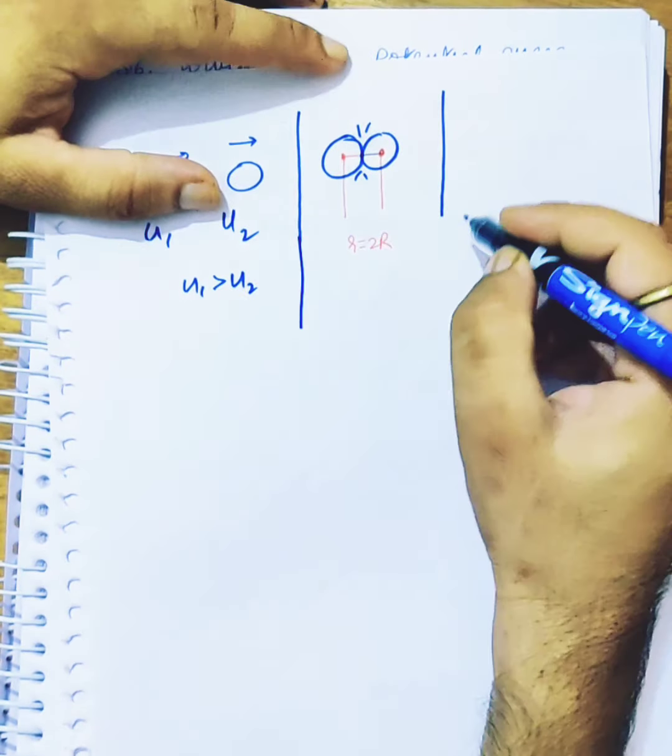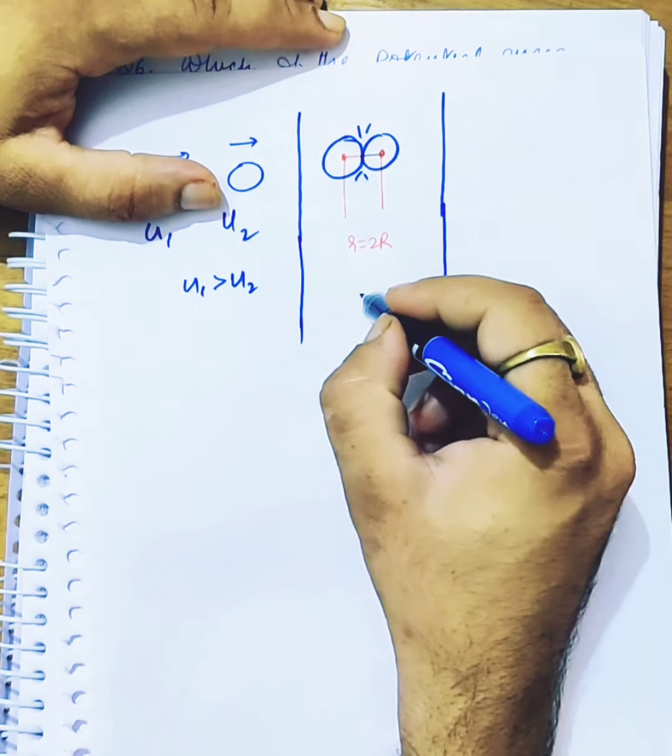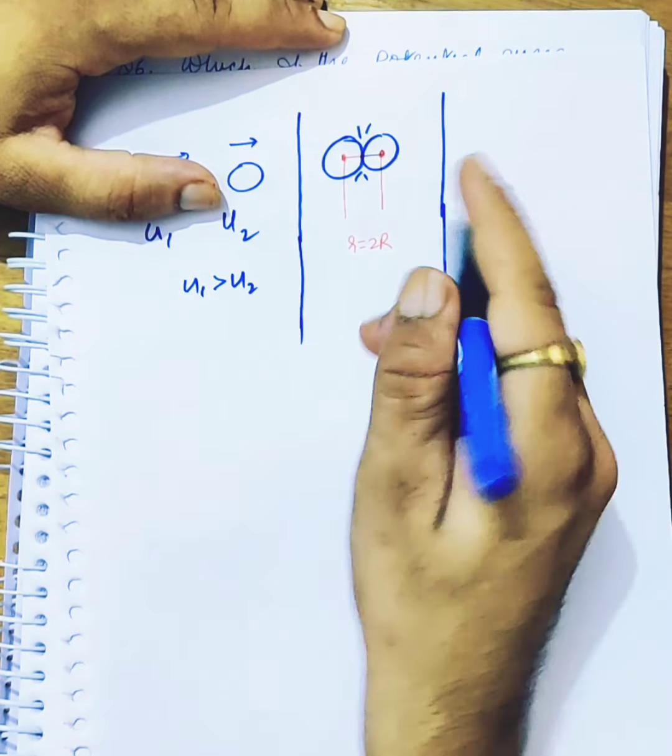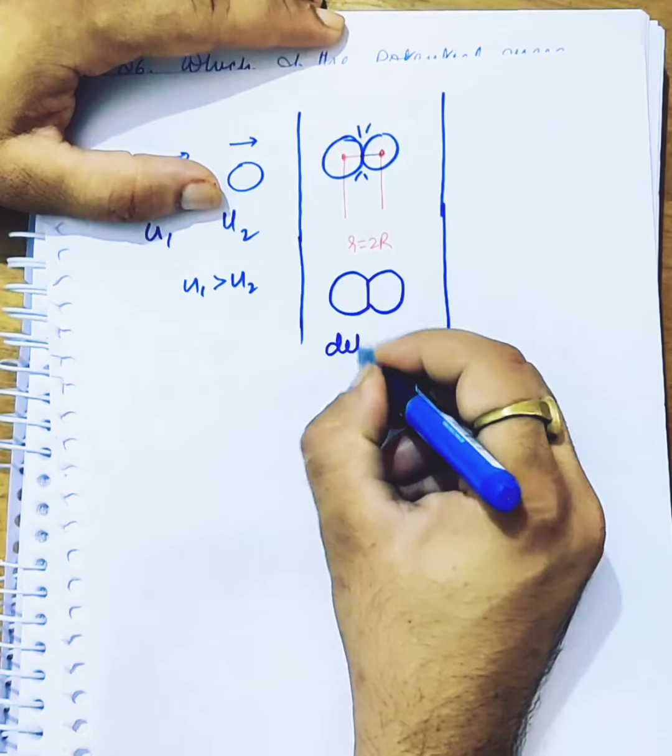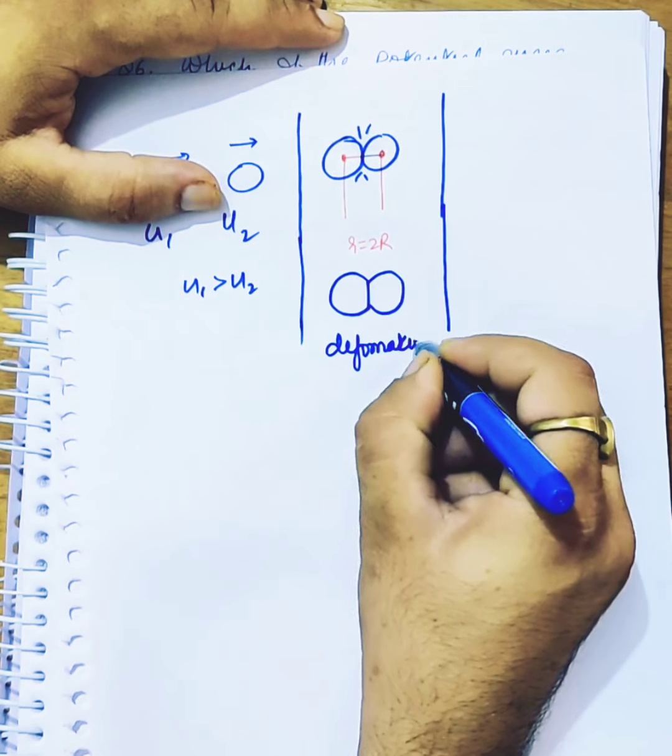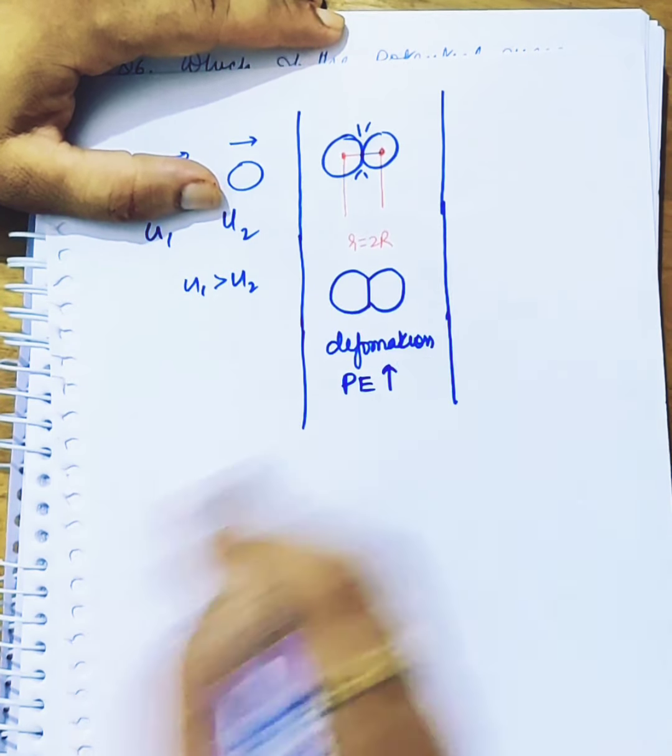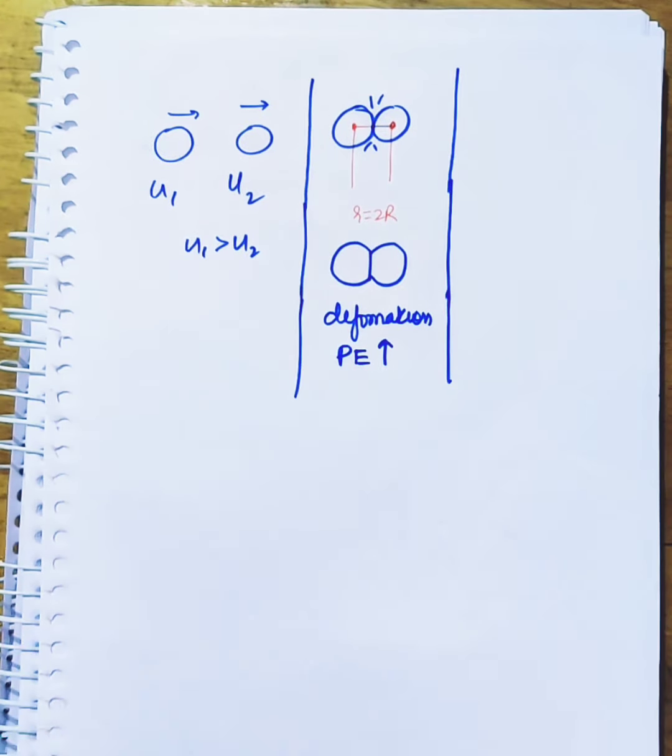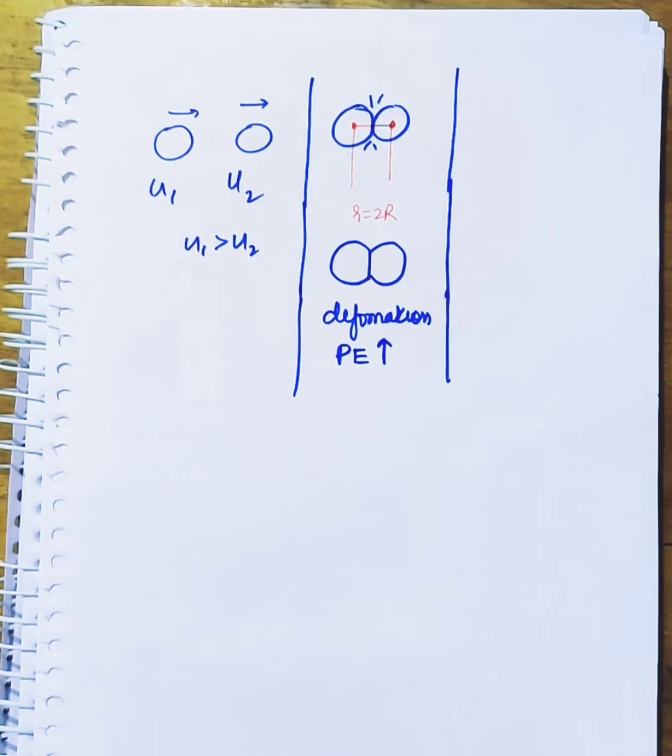I have told you that what happens in the elastic collision? The body is deforming. This deformation takes place. When the deformation starts to happen, the potential energy starts to increase. Because it's deforming, the potential energy starts to increase.